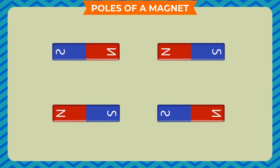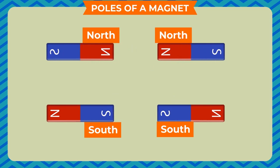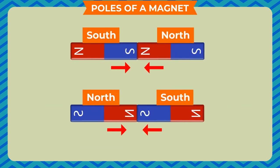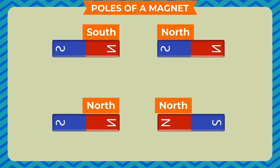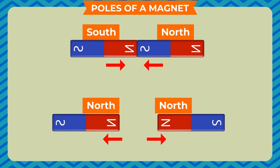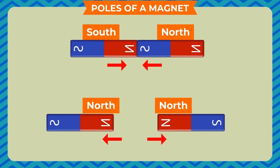The very interesting characteristics of the poles of a magnet are: similar or like poles — north-north and south-south — repel each other, meaning a force of repulsion exists between them. On the other hand, opposite or unlike poles — north-south and south-north — attract each other, meaning a force of attraction exists between them. So when you bring the ends of both magnets close to each other, they either attract or repel. If they attract, the poles are of opposite nature (north-south or south-north); if they repel, the poles are of the same nature (north-north or south-south).